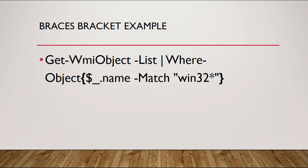Here's our example of the braces bracket — sometimes we call these the curly brackets. You use this whenever you want to store a statement block within a script. A common place to pay attention to the braces style of PowerShell bracket is when you initiate a where clause, and we see the where clause in this particular commandlet after the pipe command. We've got to use the pipe command because it takes the output of the get-wmi object list and passes it as input to the where clause.